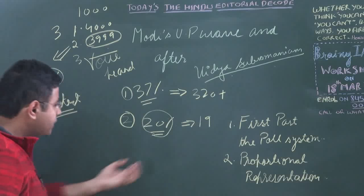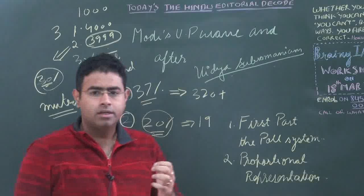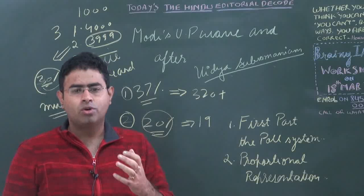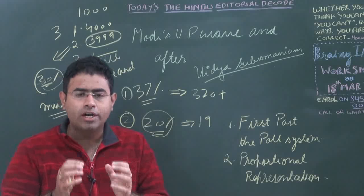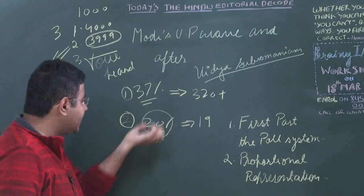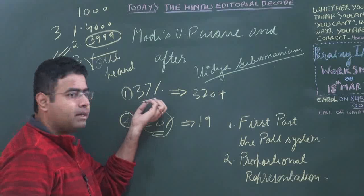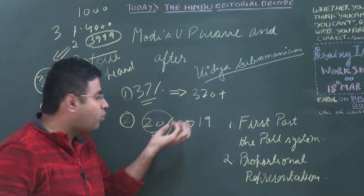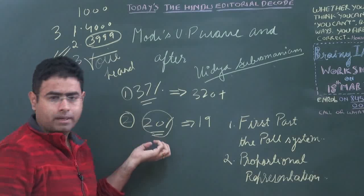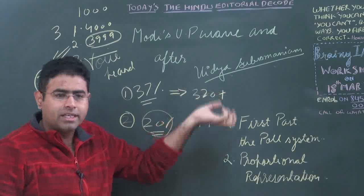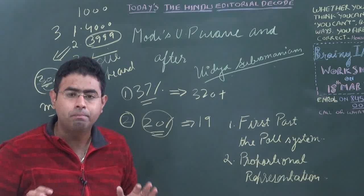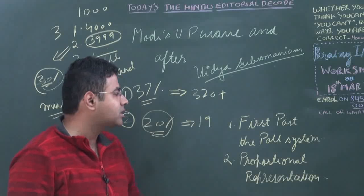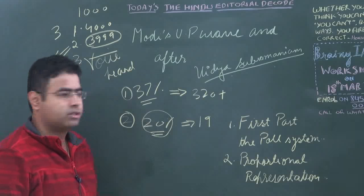So in the First Past the Post system, you can make the voice of the minority — the voice of fewer people — heard more loudly, whereas the voice of people who voted for other candidates gets muted. This is one of the biggest lacunas in the First Past the Post system.